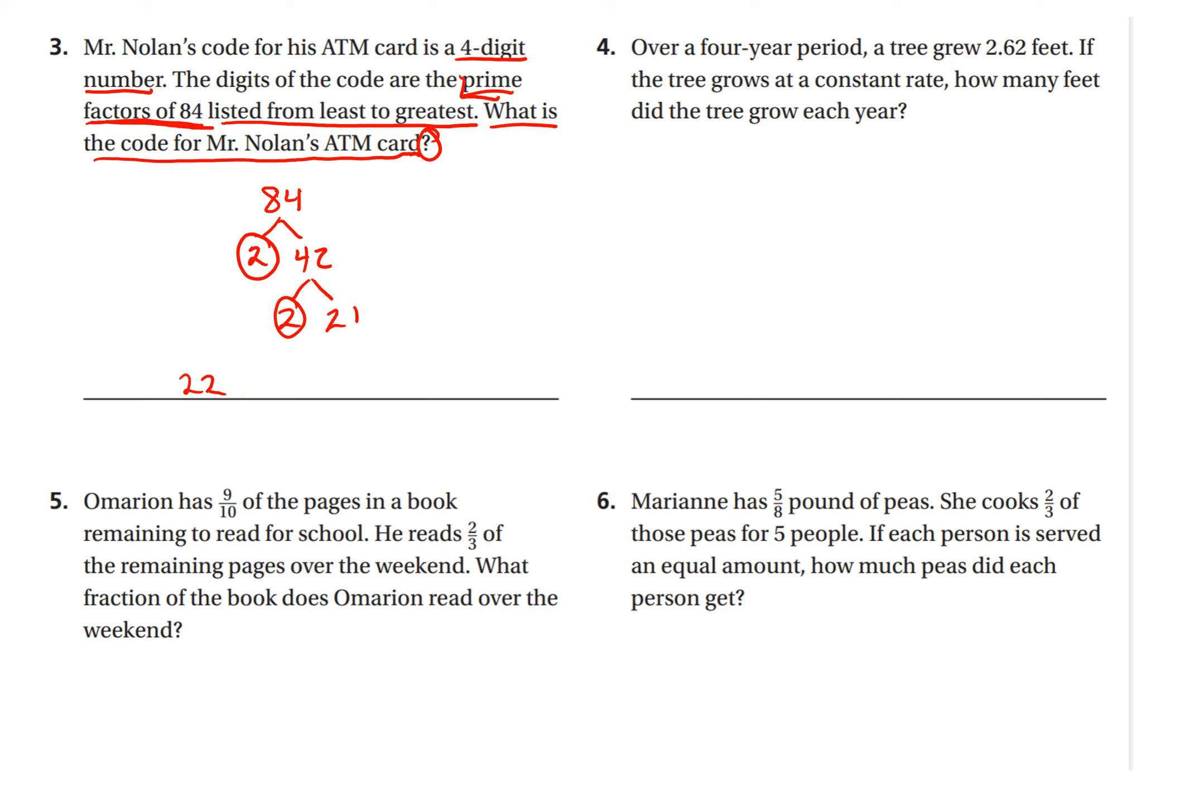If you have any questions, of course, raise your hand. Okay, number four, over a four-year period, a tree grew 2.62 feet. If the tree grows at a constant rate, how many feet did the tree grow each year? Your constant rate means the same every year. For how many years? Four years. So we need to take 2.62, the height of the tree now, and divide it by the total number of years to find out how much it grew in one year.